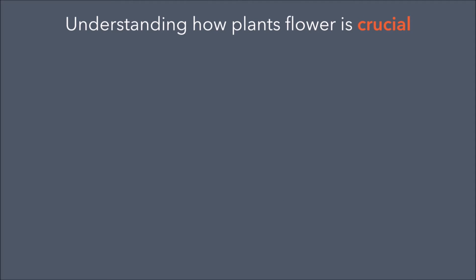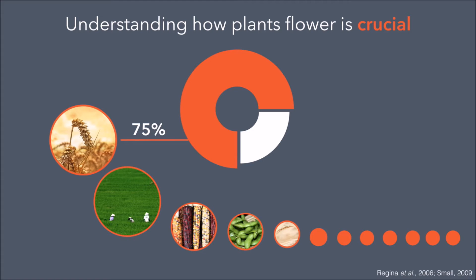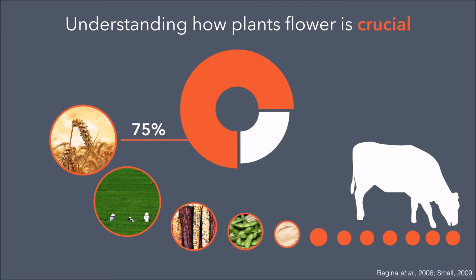Let's see why understanding how plants flower is crucial. Plants are essential in human nutrition. Wheat alone constitutes more than 20% of the calories consumed worldwide. If you consider only the 12 most consumed crops, they account for 75% of human nutrition. In addition to that, animals are also partially fed through plants. Overall, plants account for a huge majority of the nutrition resources of humanity.